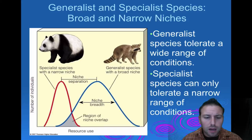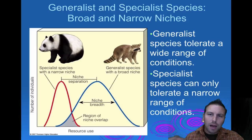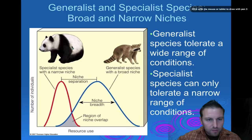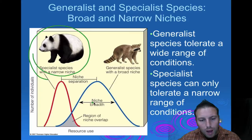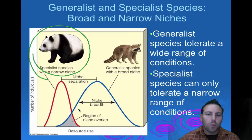Here we have generalist and specialist species. Looking at this diagram, we have a specialist species shown here. This area is known as its niche breadth. The generalist species has a much wider bell curve — a much wider niche. It's able to utilize a little bit more of the environment than the specialist can, and the opportunities it has are a little bit wider.